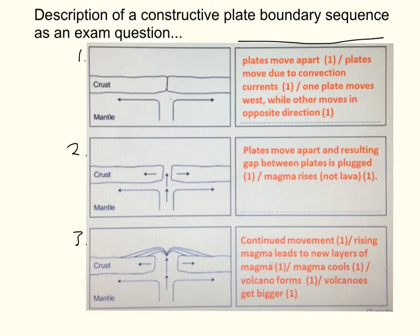So for example, number one. You can see that you have got two plates as shown by this area here marking the spread between them. These arrows are representing convection currents, and you've got the mantle labelled on. So from that you can work out that the plates are moving apart, or that convection currents are moving them, or one is moving west, one is moving in the opposite direction.